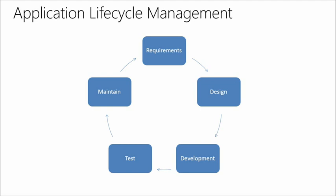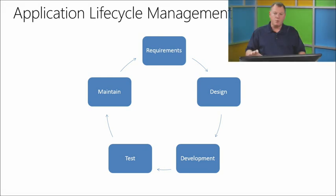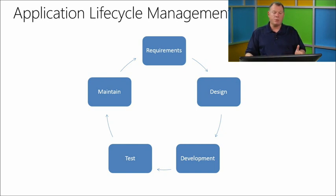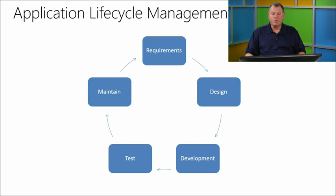We have five discrete boxes on here: Requirements, Design, Development, Test, and Maintain. This is what you'll typically find listed as an application lifecycle management — some people call it a software development lifecycle, or even a product lifecycle management. It's not specific to software development; it's a key process that helps us get to where we need to be from our software development lifecycle.